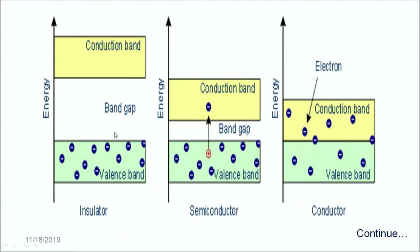So let's understand how the material classification is decided on the basis of the conduction band and the valence band and their separation, which is known as the band gap. For insulators, there is a large band gap between the valence band and the conduction band — this huge band gap is of the order of 3 eV or more. In case of semiconductors, the band gap is of the order of 0.5 electron volts to 3 electron volts. In case of conductors, there is no gap between the conduction band and the valence band, and thus the conductivity of the material is large and the material classifies itself as a conductor.